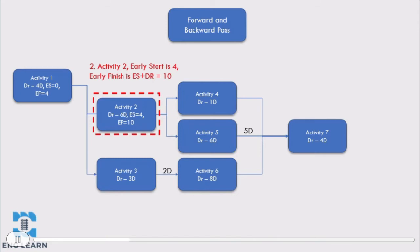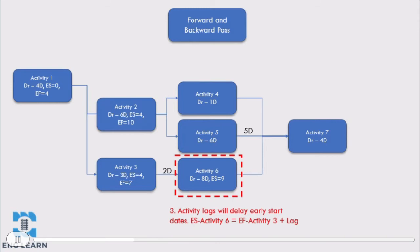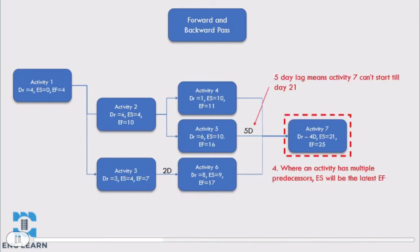We can calculate this for all subsequent activities using the same approach. The early start of an activity is the early finish of its predecessor. Where we have lags between activities, the early start of an activity will be the early finish of the predecessor plus the lag. So for activity 6, the early start is the early finish of activity 3 plus the 2-day lag. Where activities have multiple predecessors, as in the case of activity 7, the early start will be the latest early finish of its predecessors plus any lag. The early finish for activity 4 is day 11, activity 5 is day 16 plus a 5-day lag which makes it day 21, and activity 6 is day 17. Therefore the early start of activity 7 is day 21.